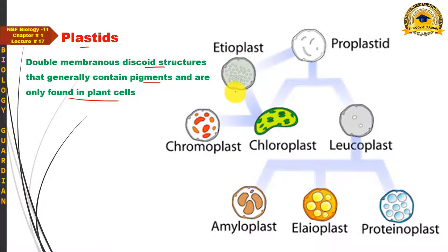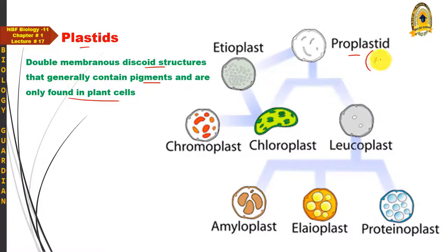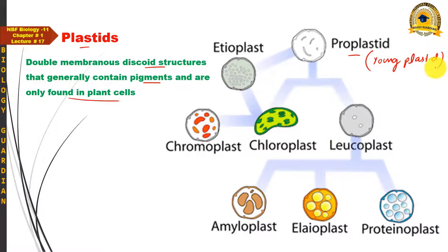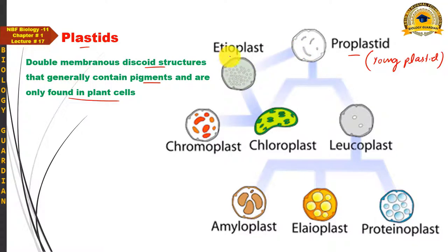Plastids also have a self-replicating property — one plastid can divide into two daughter plastids. These daughter plastids are called proplastids until their function is specified. Any young plastid formed by division of a pre-existing plastid is called a proplastid. If a proplastid develops in the absence of light, it will develop into an etioplast.